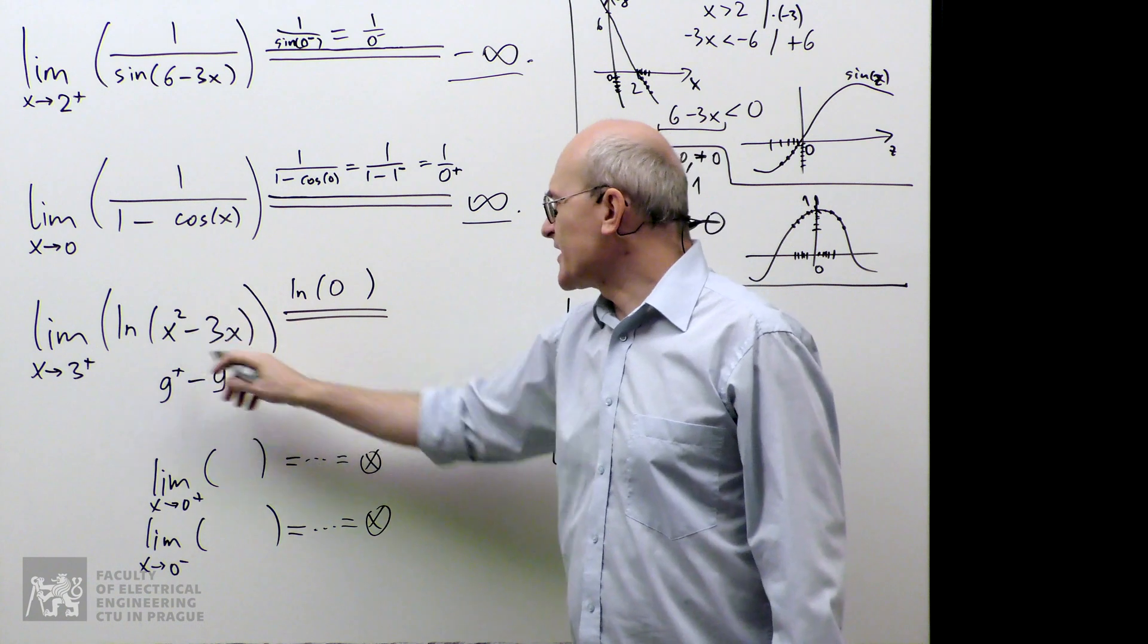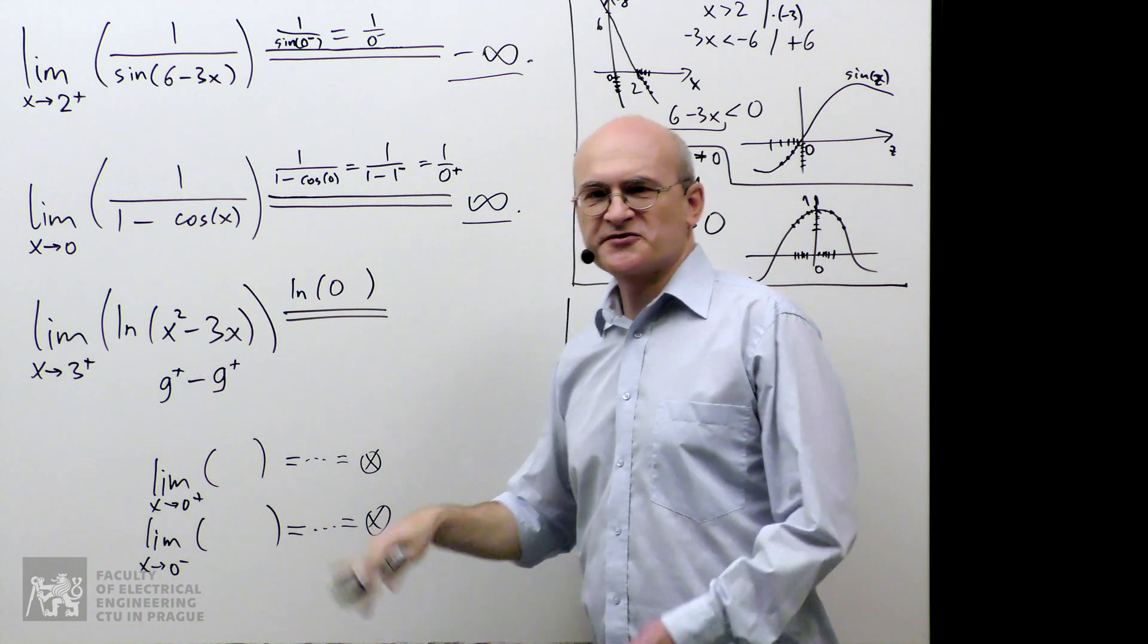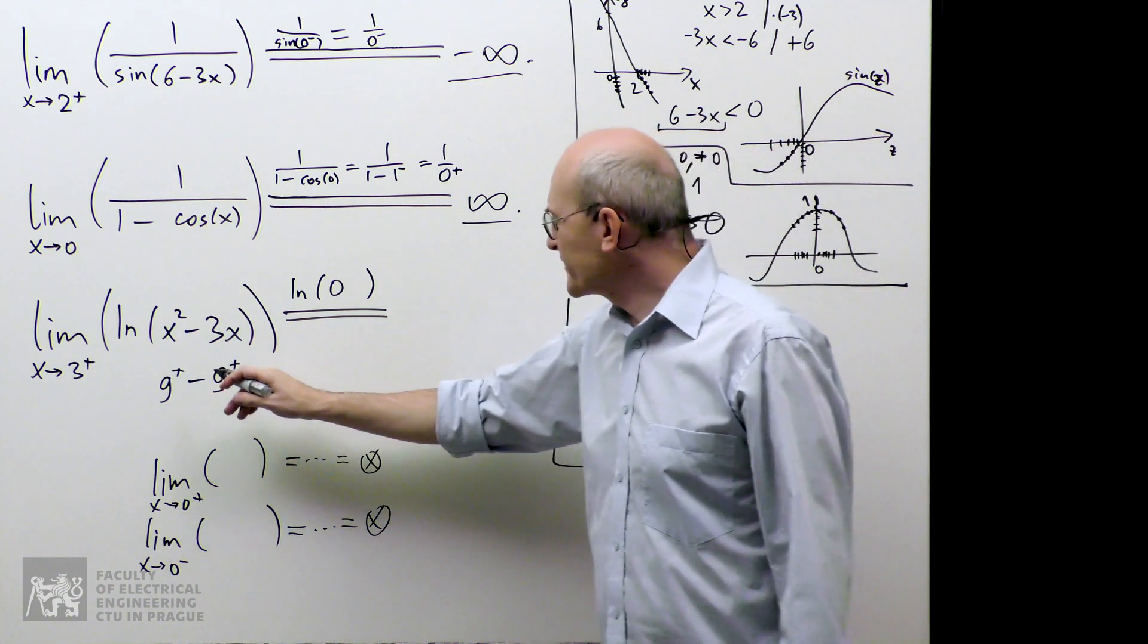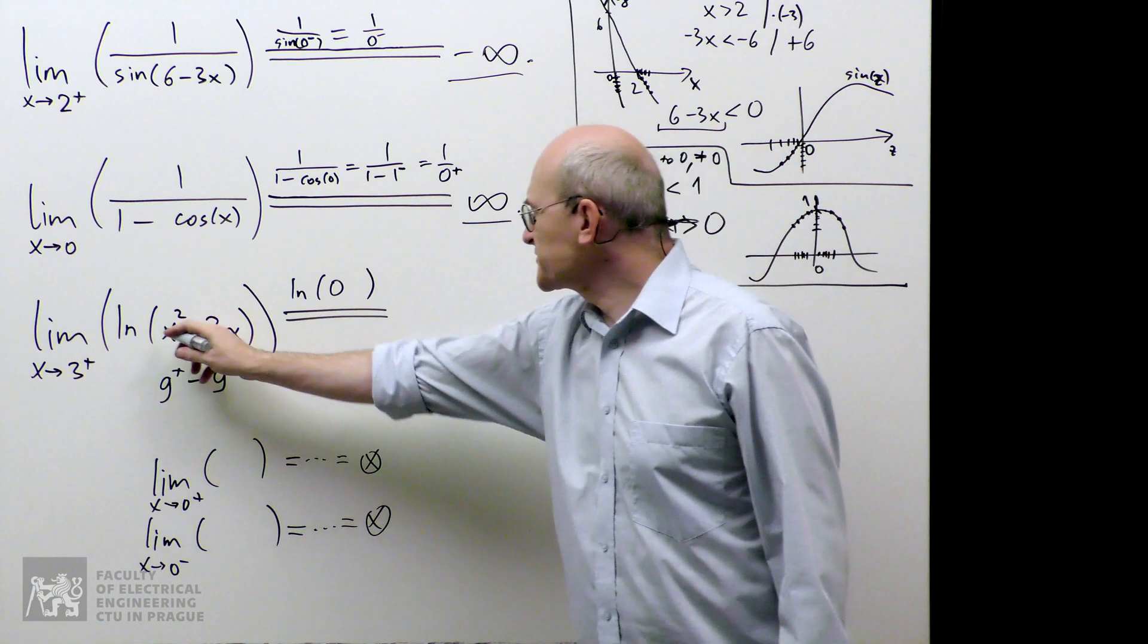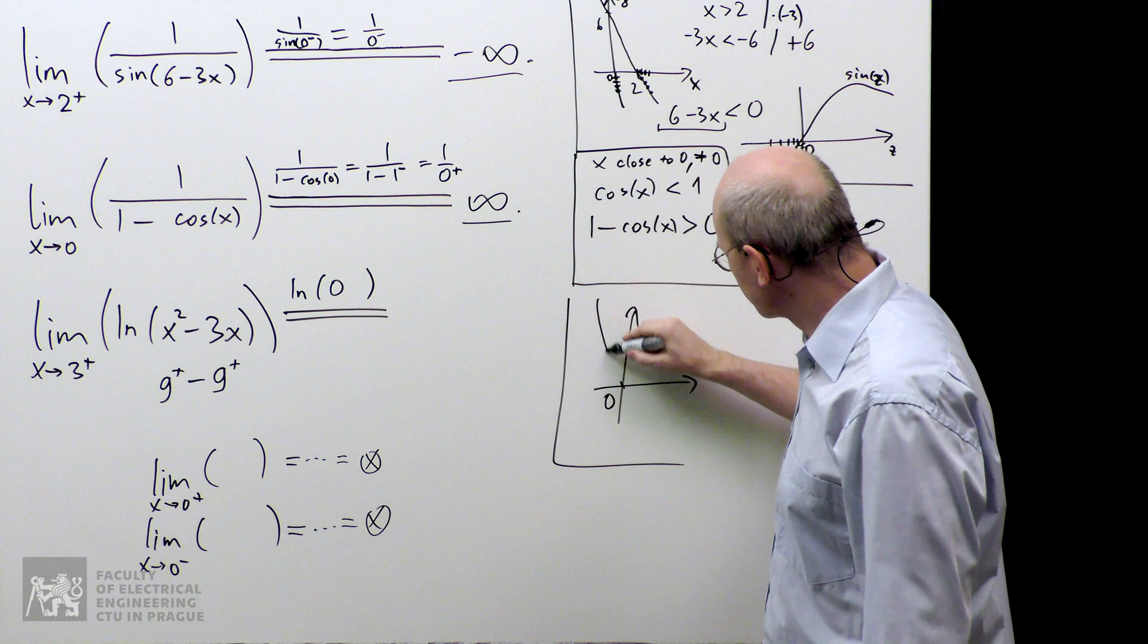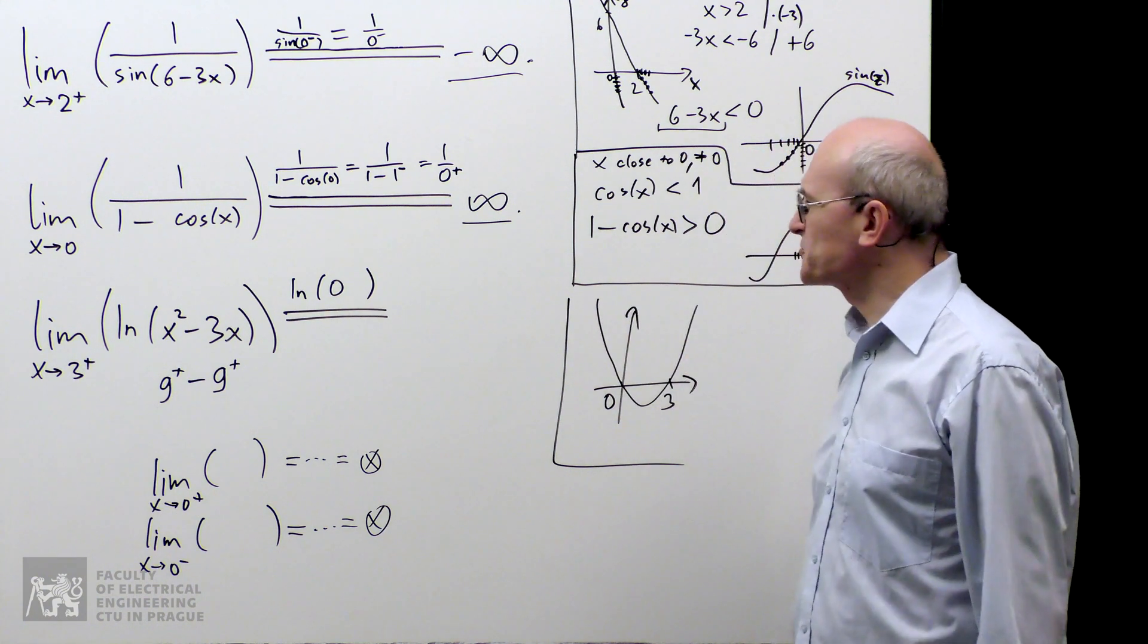x squared minus 3x. What's the graph? It's a parabola. Upwards oriented parabola. So, let's identify roots. One of them is 0 and the other one is 3. So, it looks like this. That's the picture.